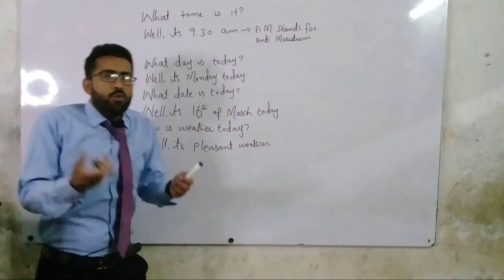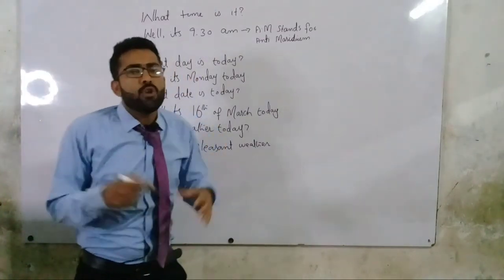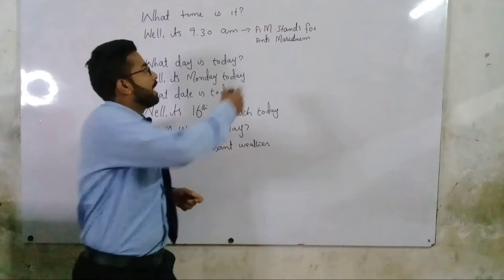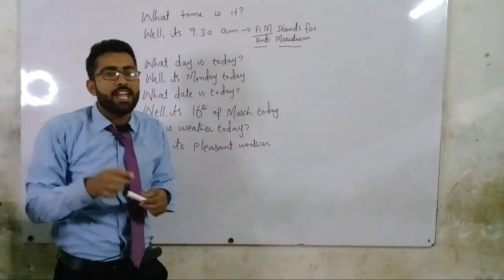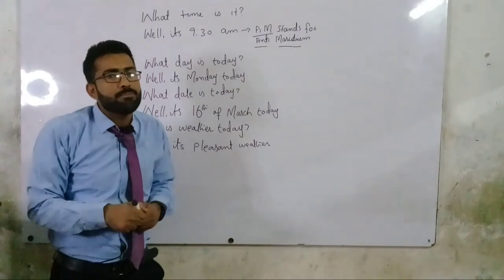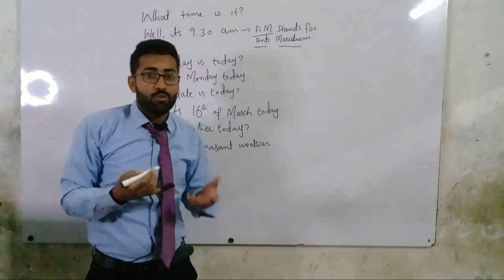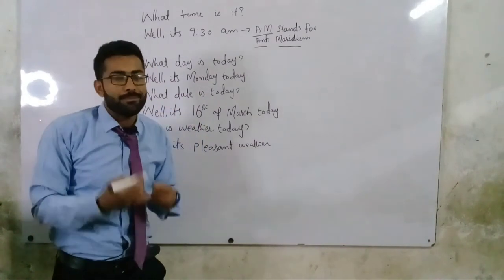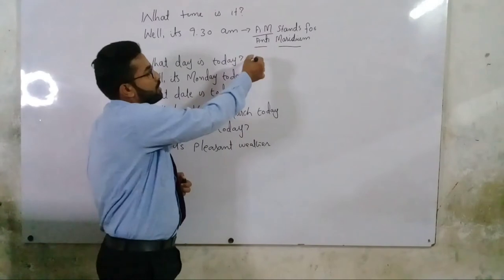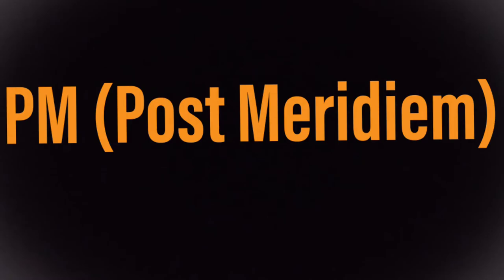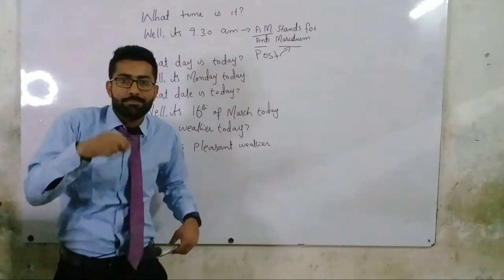What does 'a.m.' stand for? A.M. stands for ante meridiem — 'a' for ante, 'm' for meridiem. You might be confused about 'p.m.' as well. P.M. stands for post meridiem — 'p' for post, 'm' for meridiem. So you can say: 'Well, it's 9:30 p.m.' — that means post meridiem.